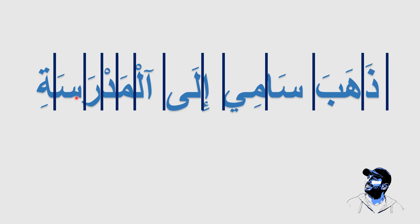Next is ra with a fatha: "ra". Then seen with a fatha: "sa". And the last one is ta with a kasra: "ti". So together: "al" — "mad" — "ra" — "sa" — "ti". Again: "al-madrasati" — which means "the school".